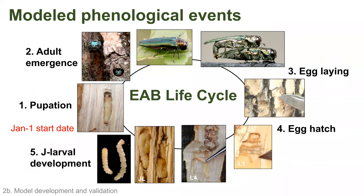For the climate suitability model, I used 3,000 presence records from areas not used for model calibration, including over a hundred records from Europe. The phenology model assumes a start date of January 1st. The phenological events it predicts are: first, pupation; second, adult emergence; third, egg laying; fourth, egg hatch; and fifth, J-larval development. In particular, predictions of adult emergence, egg laying, and egg hatch may be most important for surveillance, monitoring, and management.